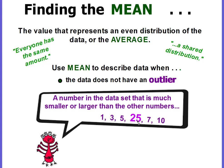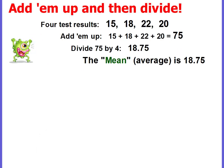But if there's not an outlier, the mean is perfect for representing the center of your data. To find the mean, you just add them up and then divide. If we have four test results — 15, 18, 22, and 20 — and we want to know what our average is, we just add them up: 15 plus 18 plus 22 plus 20 gives us 75. Then you divide by the number of data in your set. There are four pieces of data, so we divide 75 by 4 and get 18.75. So the mean of the test results is 18.75.